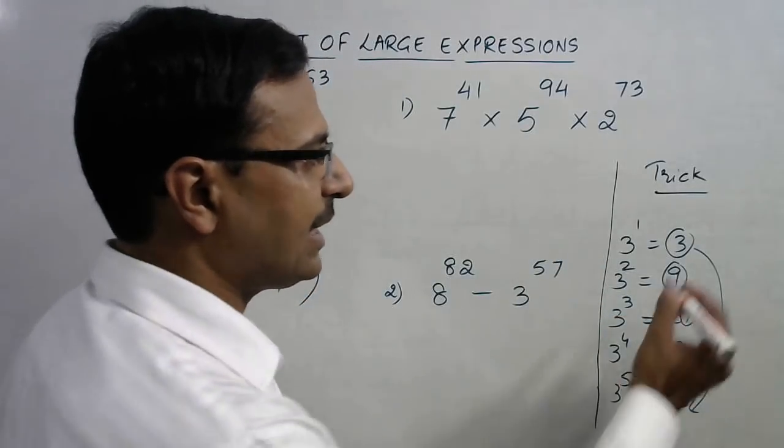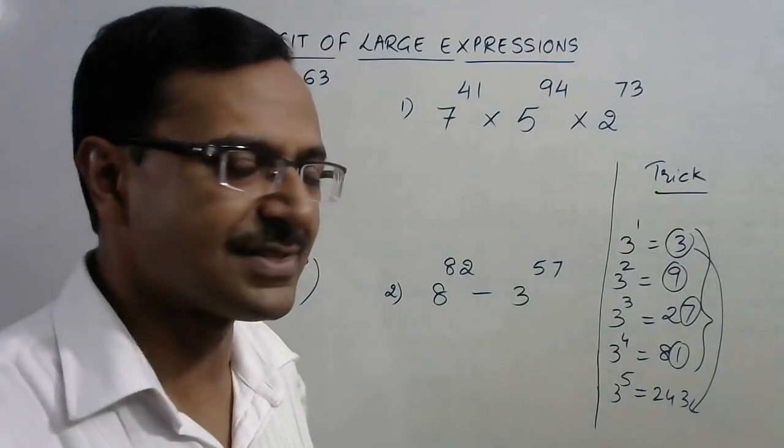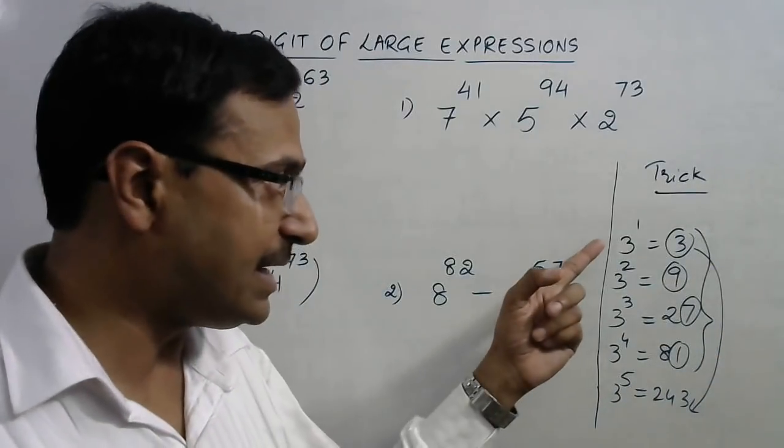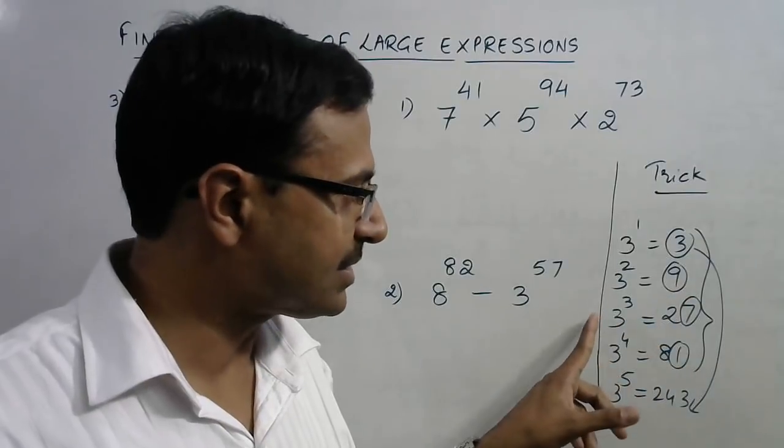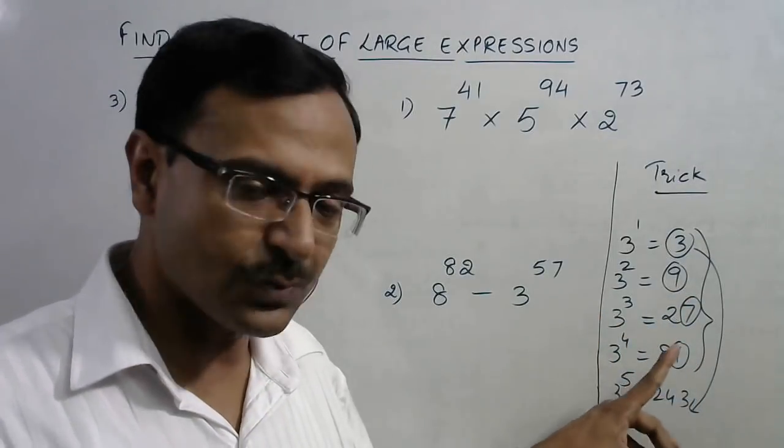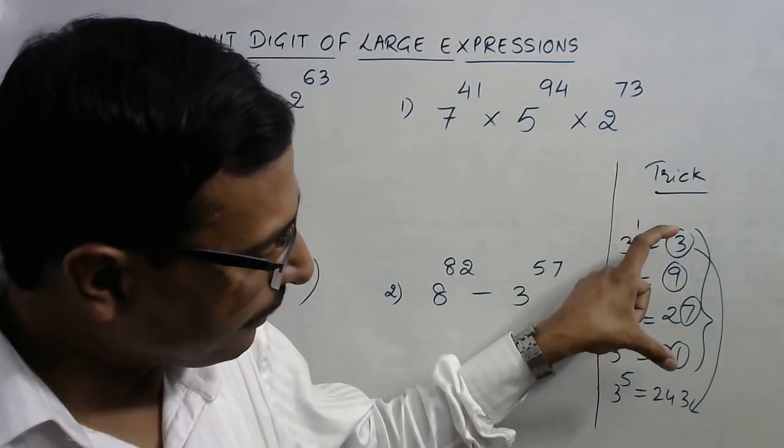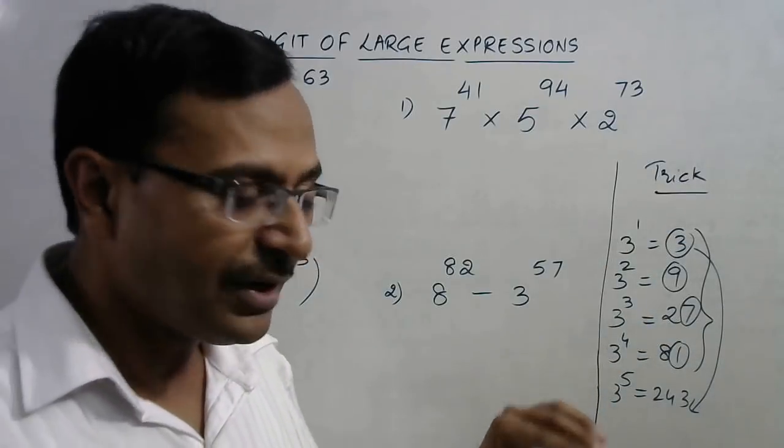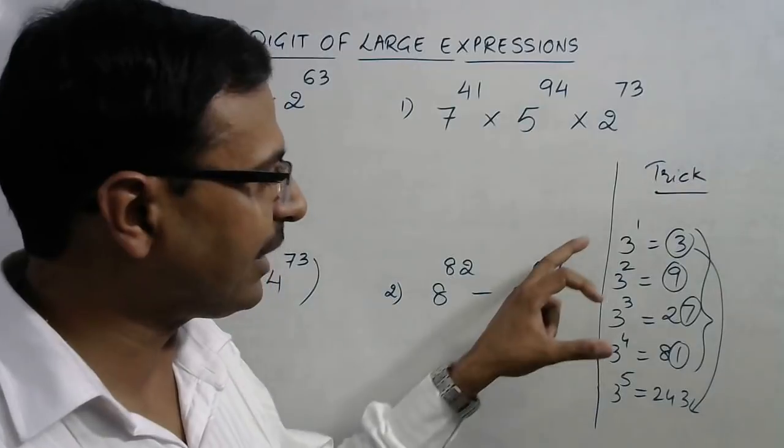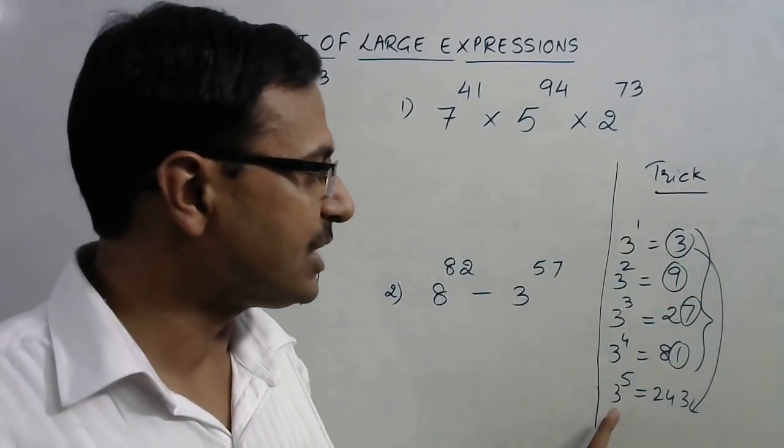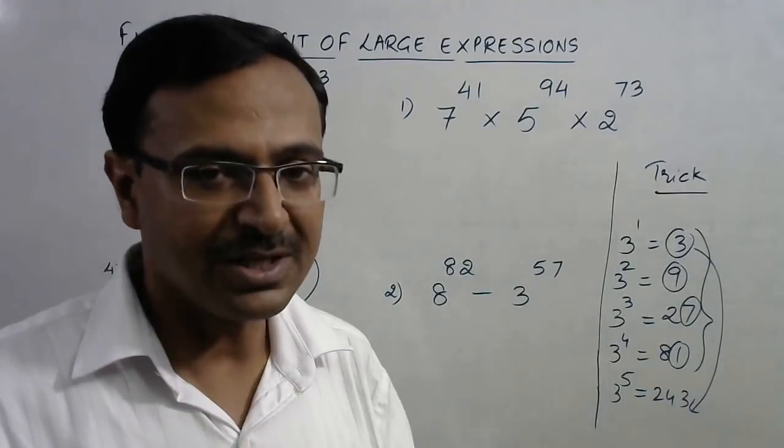It is in a cycle of 4 different unit digits. For base 3, if the power is 1, it is 3; power is 2, it is 9; power is 3, it is 7; then power is 4, it is 1. Then 4 completed. So, power 5 is actually equal to 5 minus 4, that is 1. So, 3 raised to power 1 has unit digit 3, so 3 raised to power 5 will also have unit digit 3.